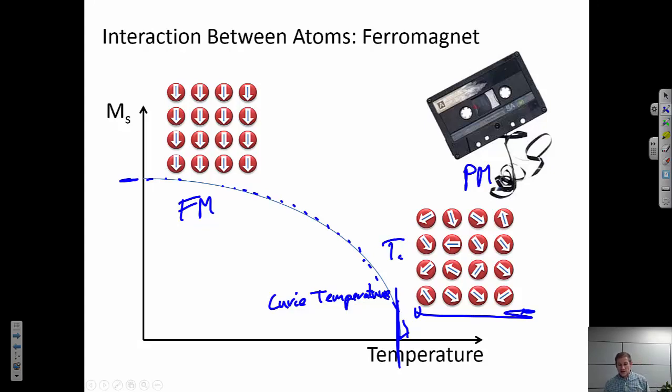Now, an important thing is that if I cool this system back down, once again my magnetic atoms would want to rearrange themselves so they're all pointing in the same direction, but that doesn't necessarily have to be exactly the same direction as it was pointing originally. So that's where you can lose your information.